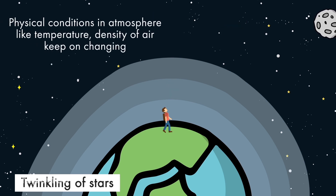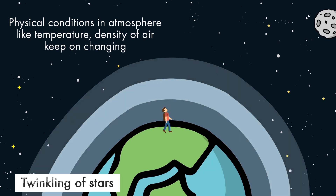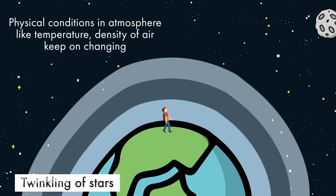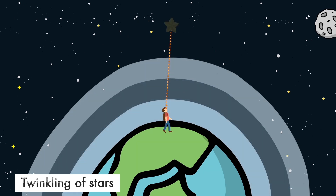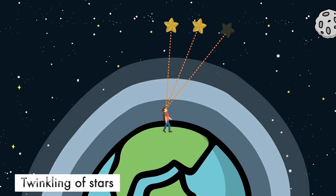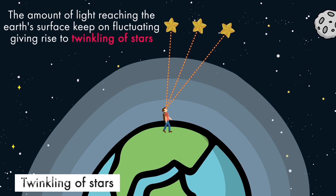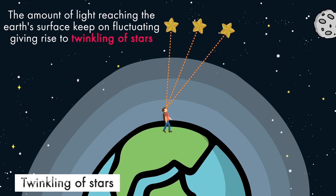Now the physical conditions in our atmosphere keep on changing — they are very dynamic. Physical conditions like temperature and density of the various layers of air in the atmosphere keep on changing. Due to this, the apparent position of the star keeps on fluctuating. As a result, the amount of light which reaches the observer on the earth's surface keeps on fluctuating and flickering. So the star sometimes appears to be bright and sometimes appears to be faint.